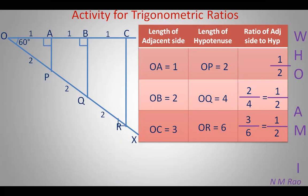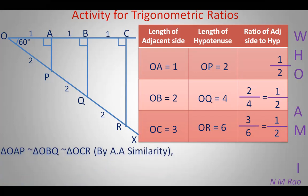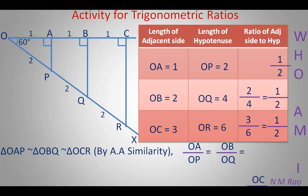Here, OAP, OBQ, and OCR are all right angle triangles, and angle O is the common angle for all three. Therefore, triangles OAP, OBQ, and OCR are similar triangles by the AA similarity criteria. These criteria will be discussed in the similarity concepts in the triangle chapter. The sides ratios OA/OP equals OB/OQ equals OC/OR, and we have already seen in the table they are all equal to 1/2.